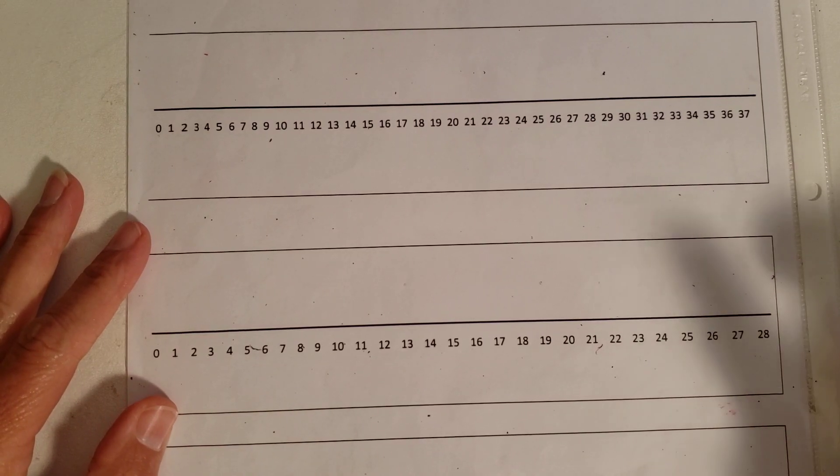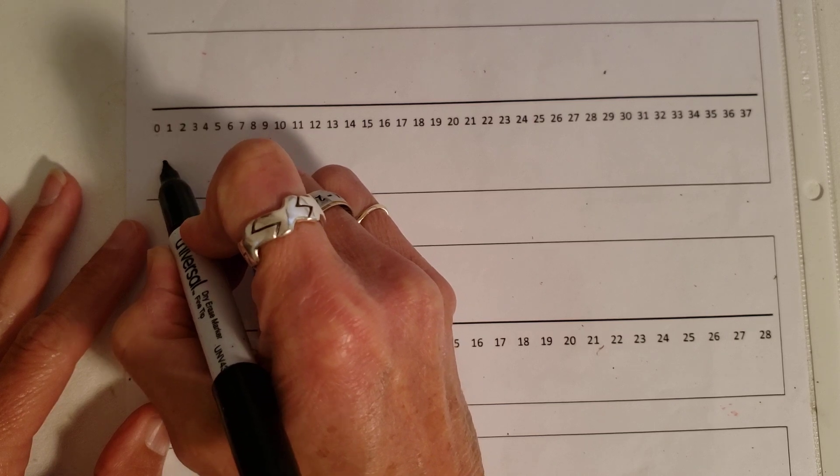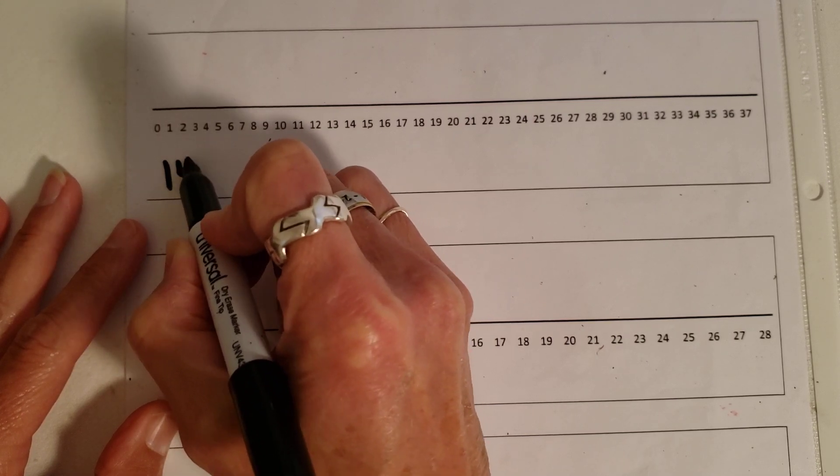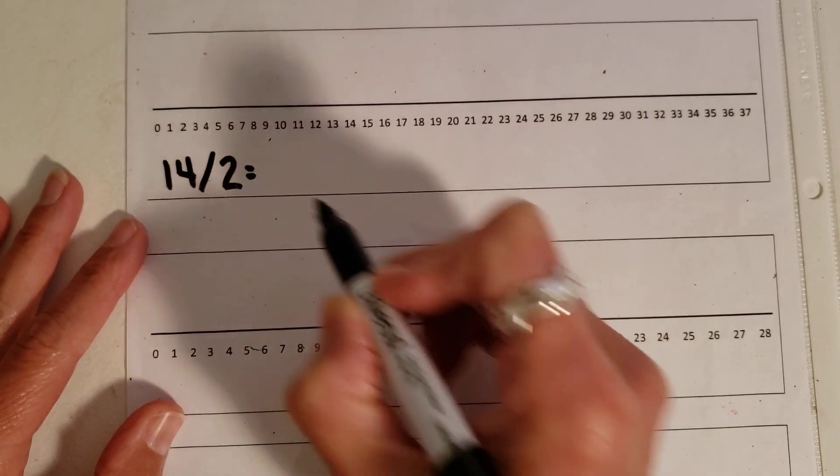Okay, we're going to be looking at 14 divided by 2. So I'm going to go ahead and put our problem here. We're looking for the quotient. 14 divided by 2, we're going to find out what that is.